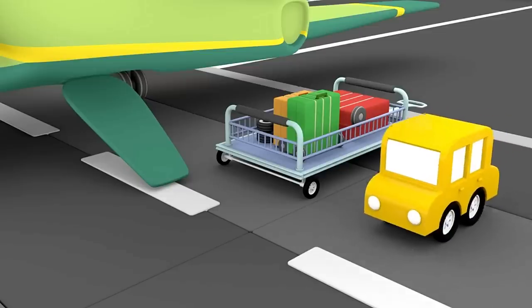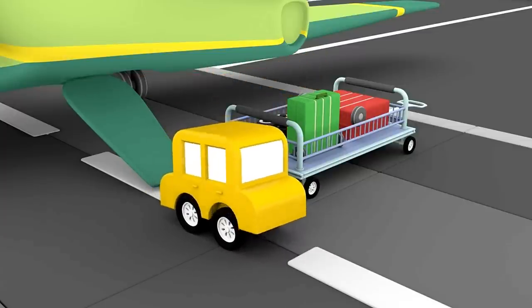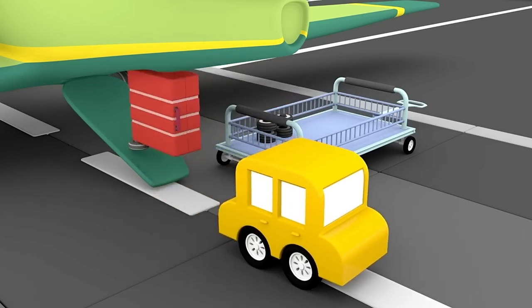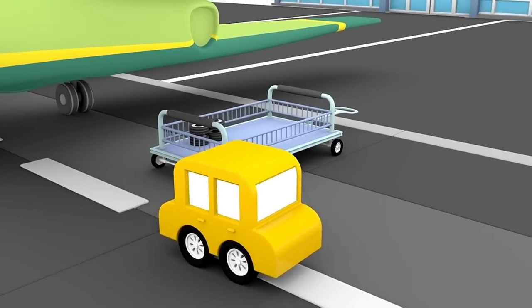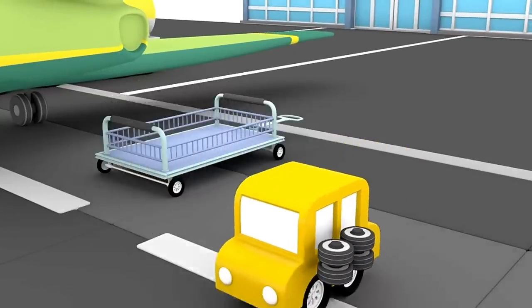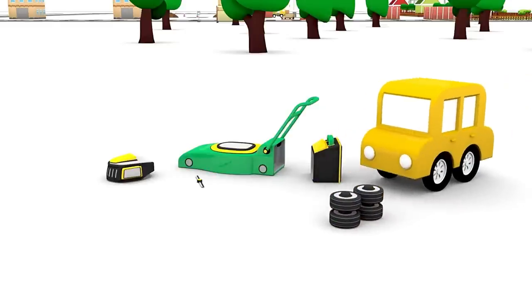The tanker is filling up the plane with fuel. The car is loading the suitcases. Look, there are wheels at the luggage trolley. Now we have all the parts.